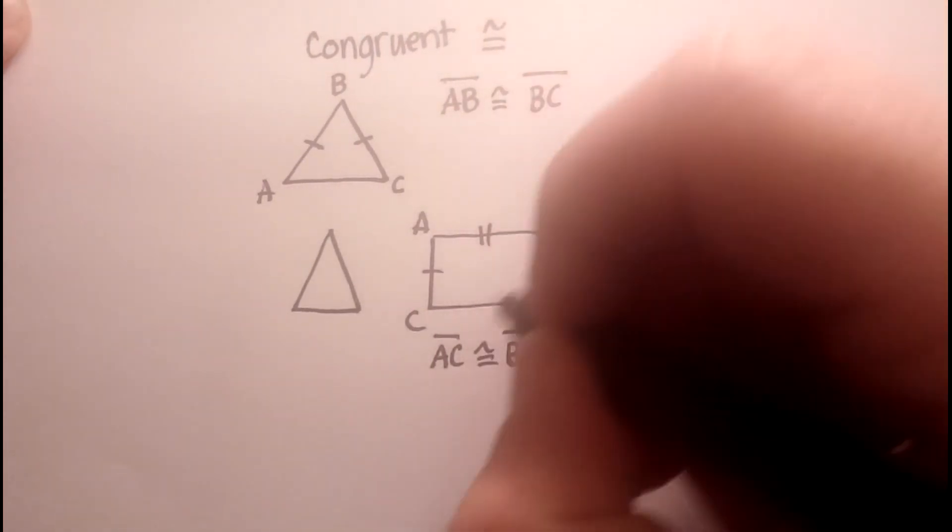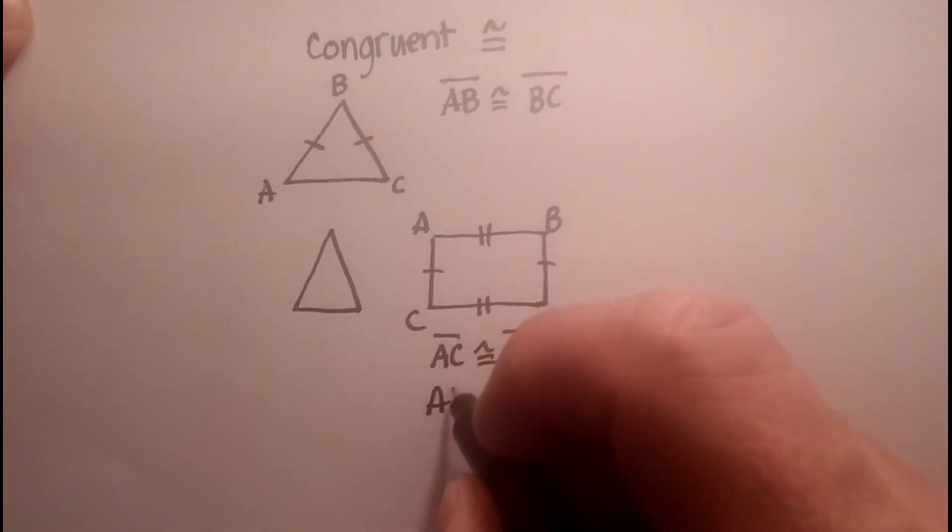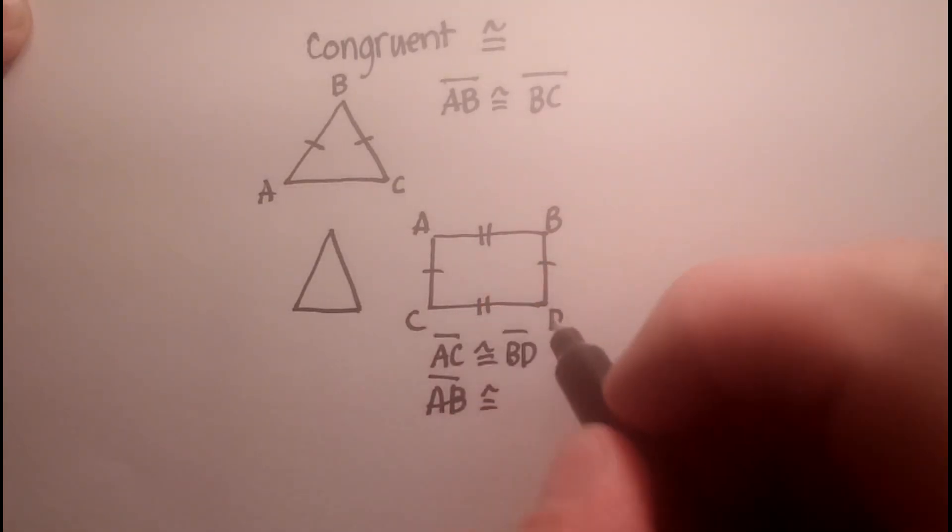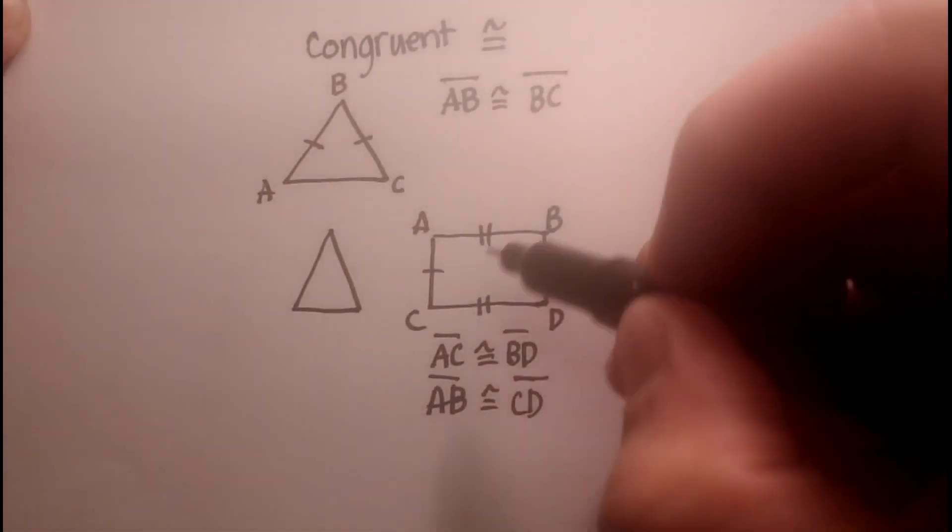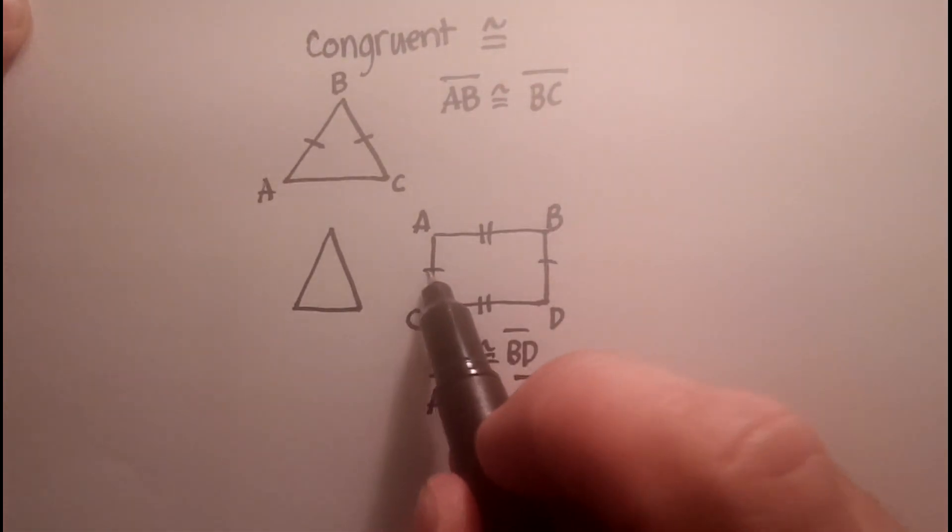I could also say that AB is congruent with CD. And look what I did. I had to draw two slash marks and indicate those are two slash marks.